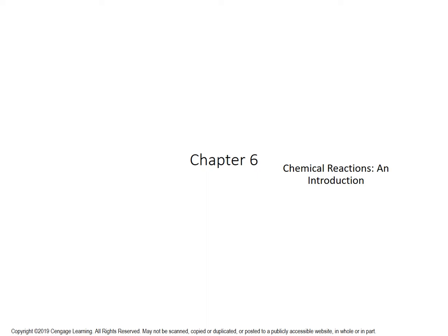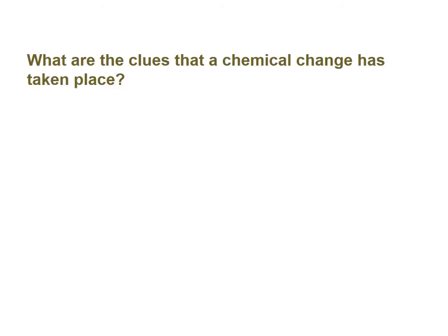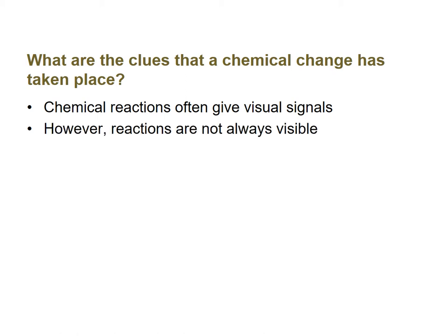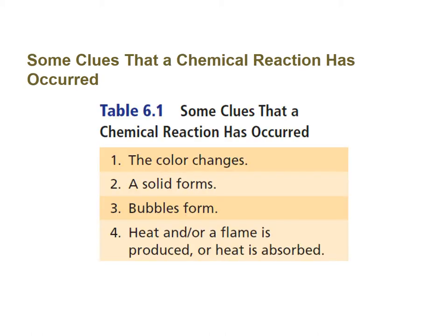Today we're talking about chemical equations and how to balance them. Things we need to talk about: how do we know that a chemical change has taken place? Chemical reactions very often give us some visual signals. Sometimes not. Sometimes they're not always visible to you. So here are some clues.